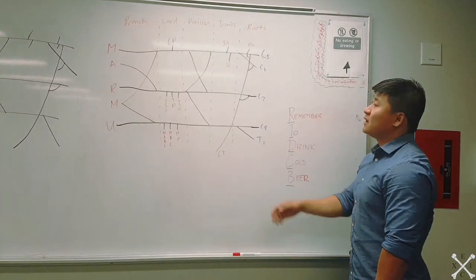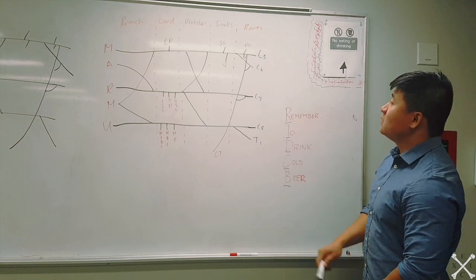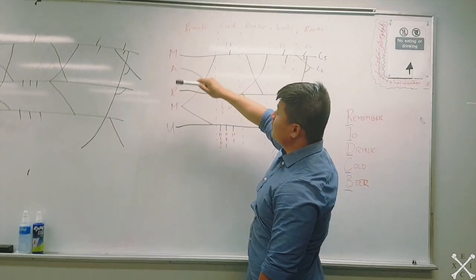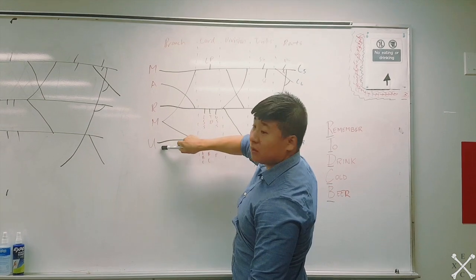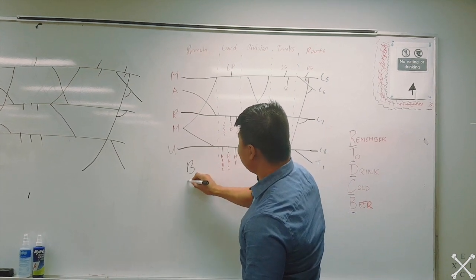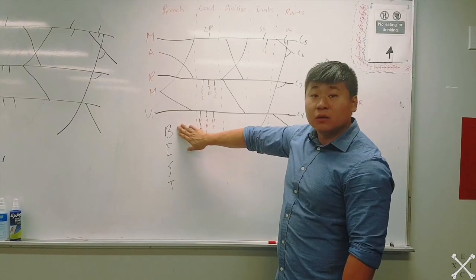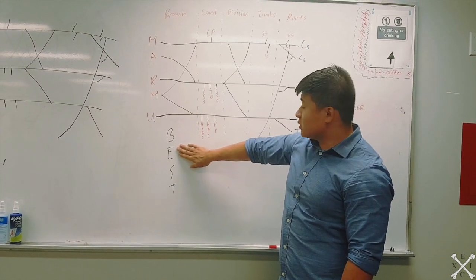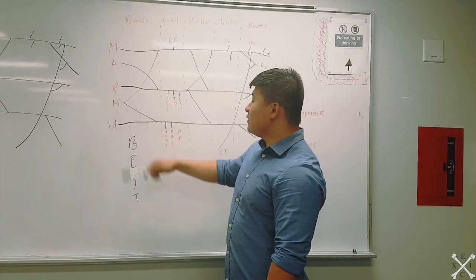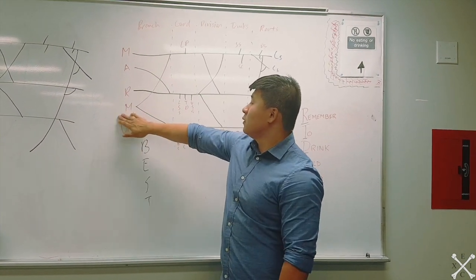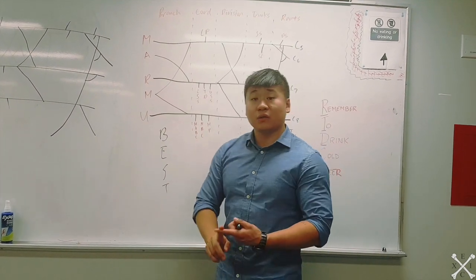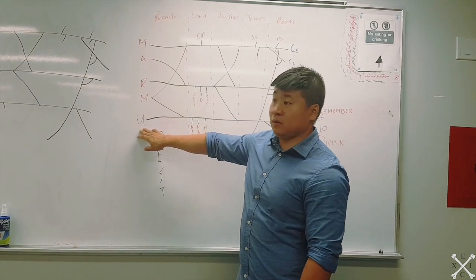The nerves are MARMU: musculocutaneous, axillary, radial, median, and ulnar. For radial, the innervations are BEST: brachioradialis, all extensor muscles, supinator, and triceps. Everything else on your arm is your median nerve. The ulnar only innervates the flexor carpi ulnaris, flexor digitorum profundus, and muscles of your hand.